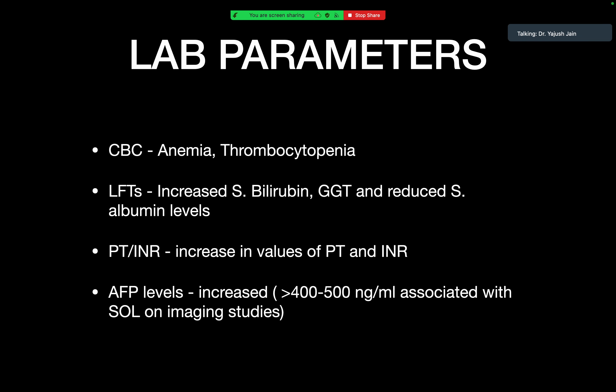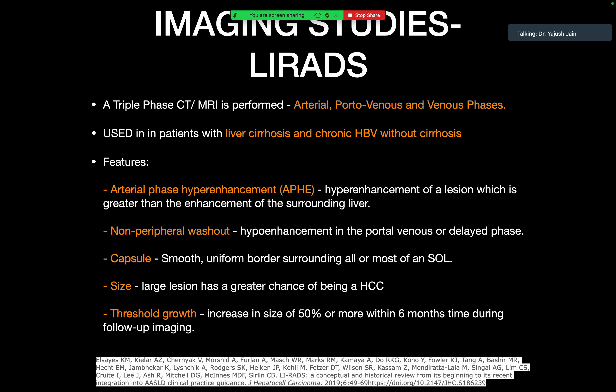The four main lab parameters for assessment of the patient with cirrhotic liver are CBC, LFT, PT/INR, and AFP levels. CBC will show anemia and thrombocytopenia in the form of reduced hemoglobin and platelet counts. LFTs will show increased serum bilirubin and GGT levels and reduced albumin. PT/INR will show deranged coagulation with raised values. AFP levels will also be increased; however, if AFP levels are raised more than 400–500 nanogram/mL and we can see a lesion in a cirrhotic liver, we can label it as HCC.